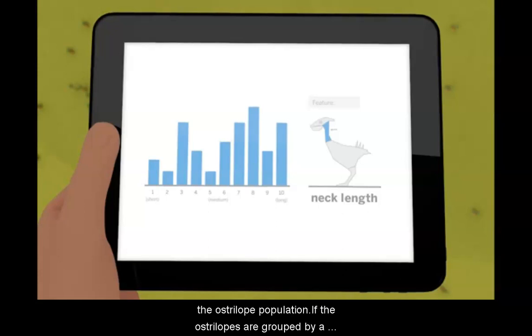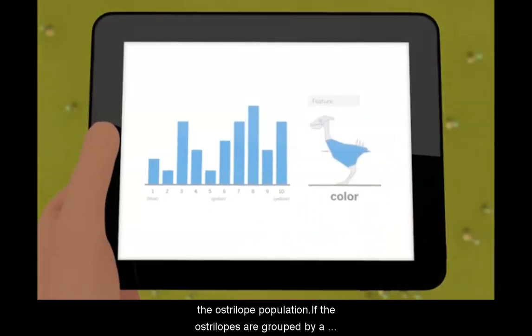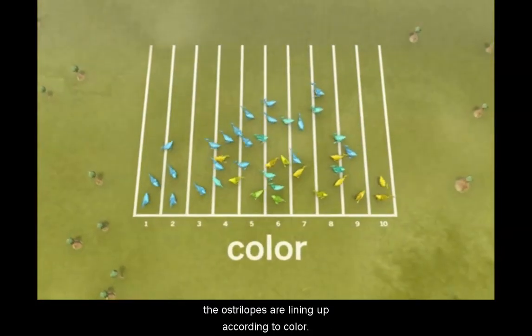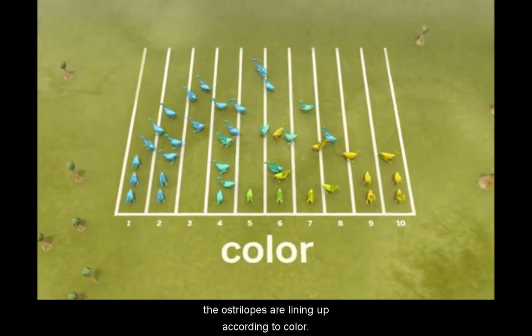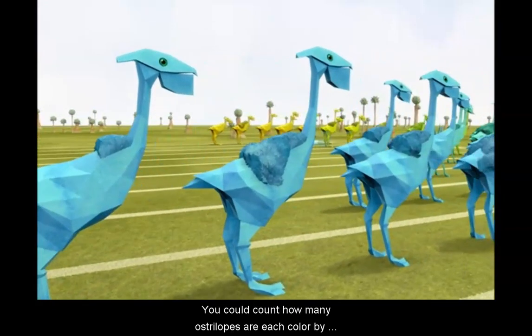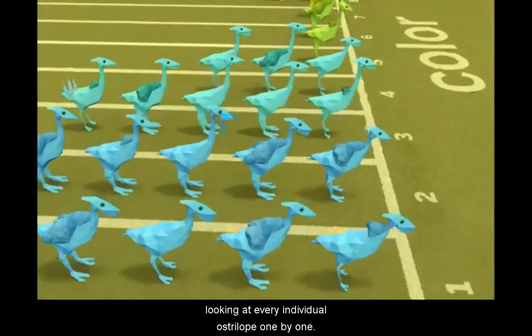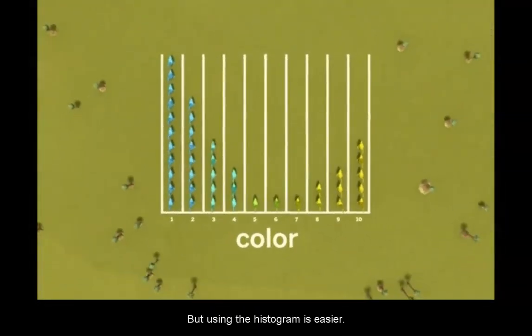If the ostrilopes are grouped by a different feature, the shape of the histogram will change. Now the ostrilopes are lining up according to color. You could count how many ostrilopes are each color by looking at every individual ostrilope, one by one. But using the histogram is easier.